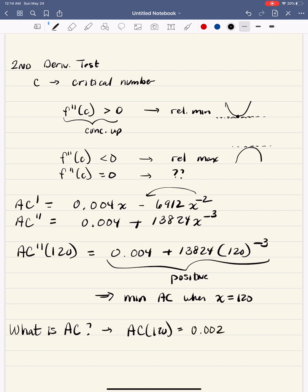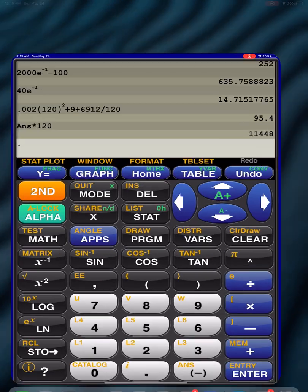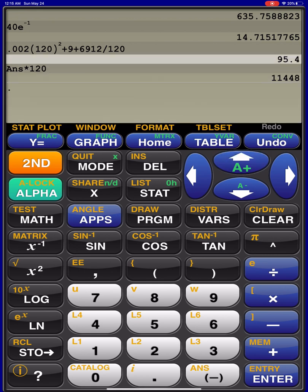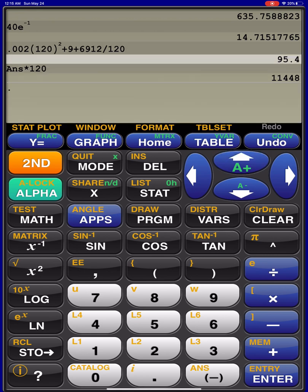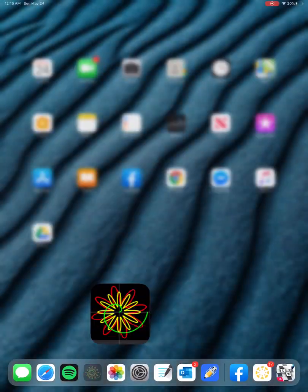which remember was 0.002 X squared plus nine plus 6912 over X. And I believe if we do that, let me go to my calculator here. There's that line. And there's the average cost, $95.40.